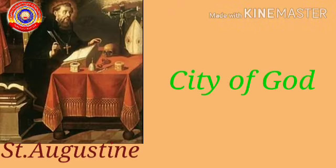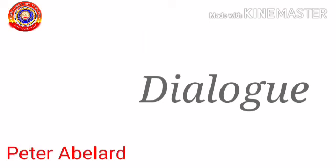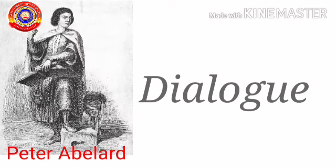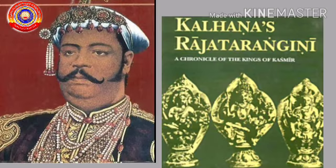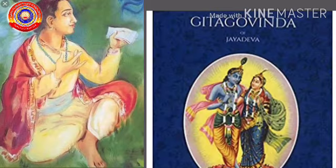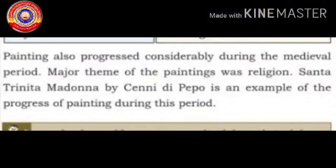Saint Augustine's work was called City of God. Peter Abelard's work was called Dialogue. Kalhana's work was called Rajatarangini. And Jayadeva's work was called Gita Govinda.